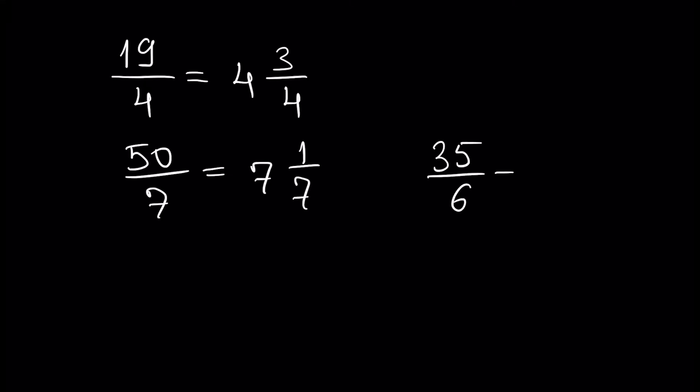Another example is 35 over 6. Since we have 6 inside 35 five times, it will be 30. We write 5, and 5 is the remainder, and the denominator is unchanged.